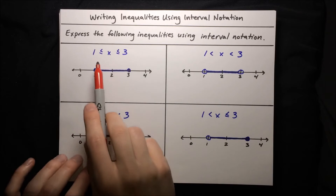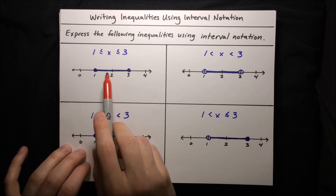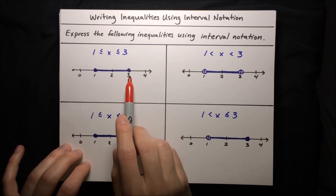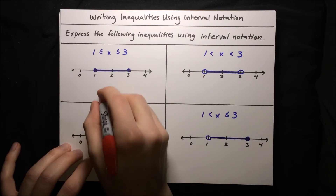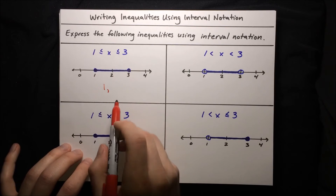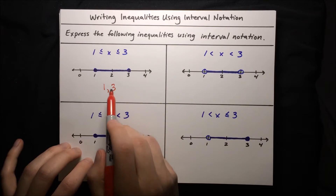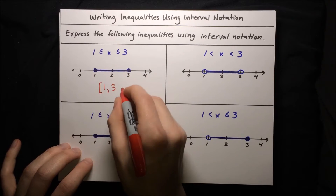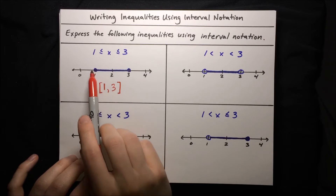The first inequality we'll look at is x is greater than or equal to 1 and less than or equal to 3. That's just the segment on the real line with closed circles at 1 and at 3, because x can be equal to 1 and can be equal to 3. In interval notation, we write down the endpoints: the left endpoint is 1 and the right endpoint is 3, giving us 1, 3. We represent the closed circles by brackets, so we put a bracket on the 1 and a bracket on the 3.